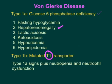Inorganic phosphate exits through T2 transporter and glucose exits through T3 transporter. Type 1b shows all the same signs and symptoms as type 1a — fasting hypoglycemia, hepatorenomegaly, lactic acidosis, ketoacidosis, hyperuricemia, and hyperlipidemia — along with neutropenia and neutrophil dysfunction, making these patients at risk of infection.